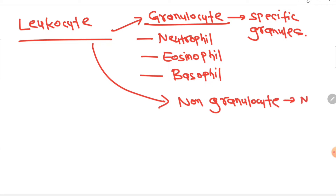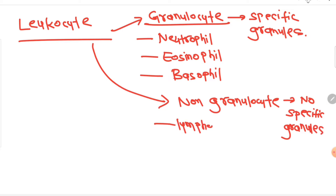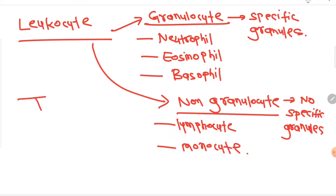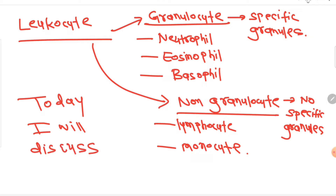Non-granulocytes — lymphocytes and monocytes — do not have specific granules visible microscopically. Today I am going to teach you the morphology of granulocytes, and we will discuss granulopoiesis in detail.